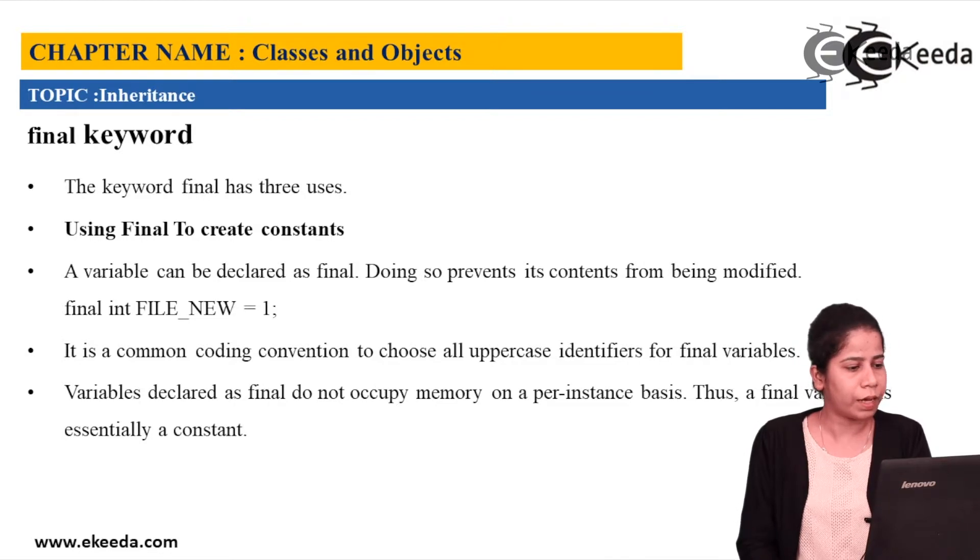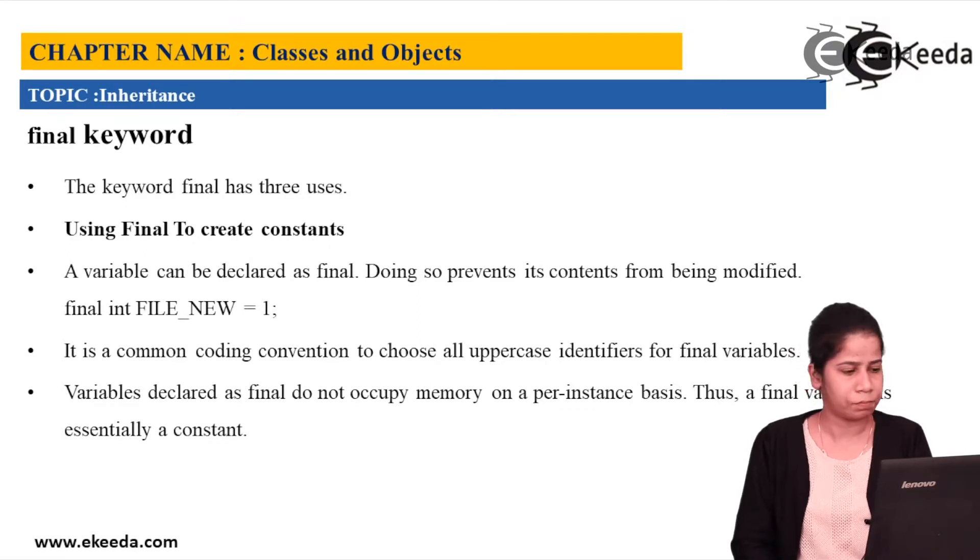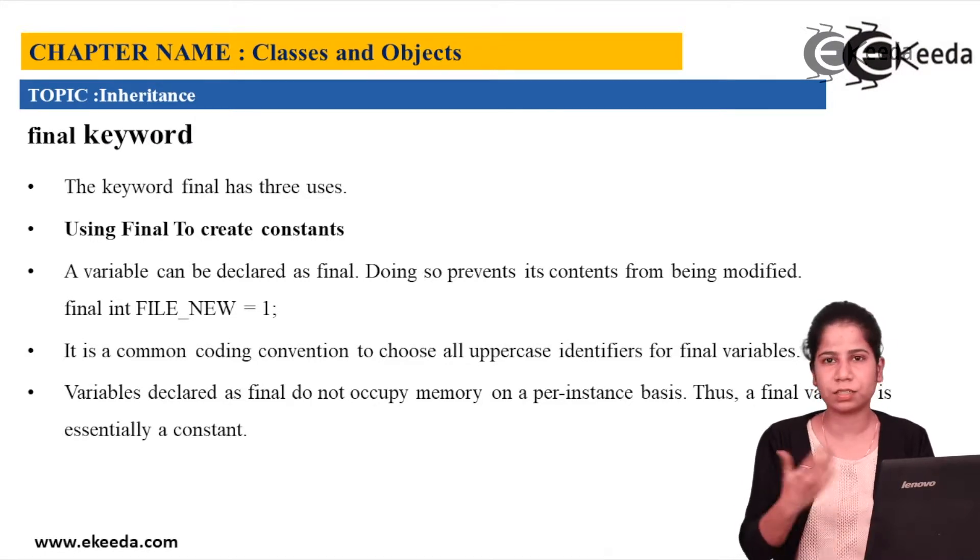So the keyword final has three uses. So using final to create constants. So what you have to do is just give final to the variable. So the variable can be declared as final. Doing so it prevents the content from being modified. That is constant. So final int FILE_NEW and the value is given as 1.